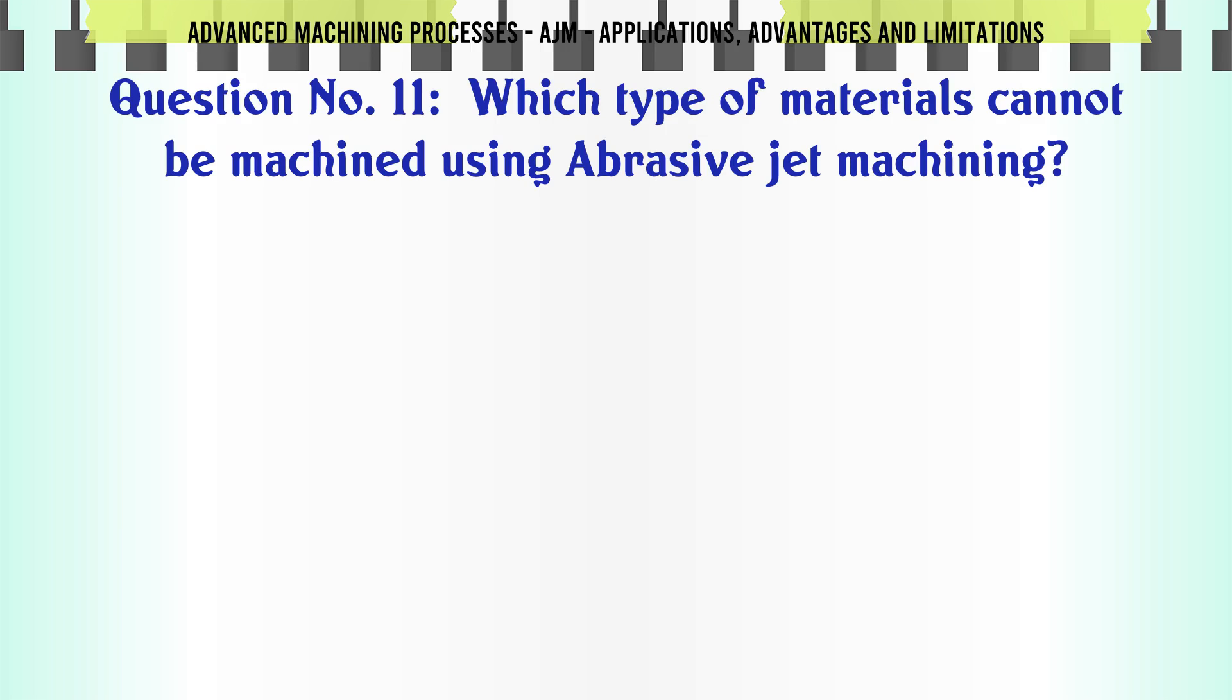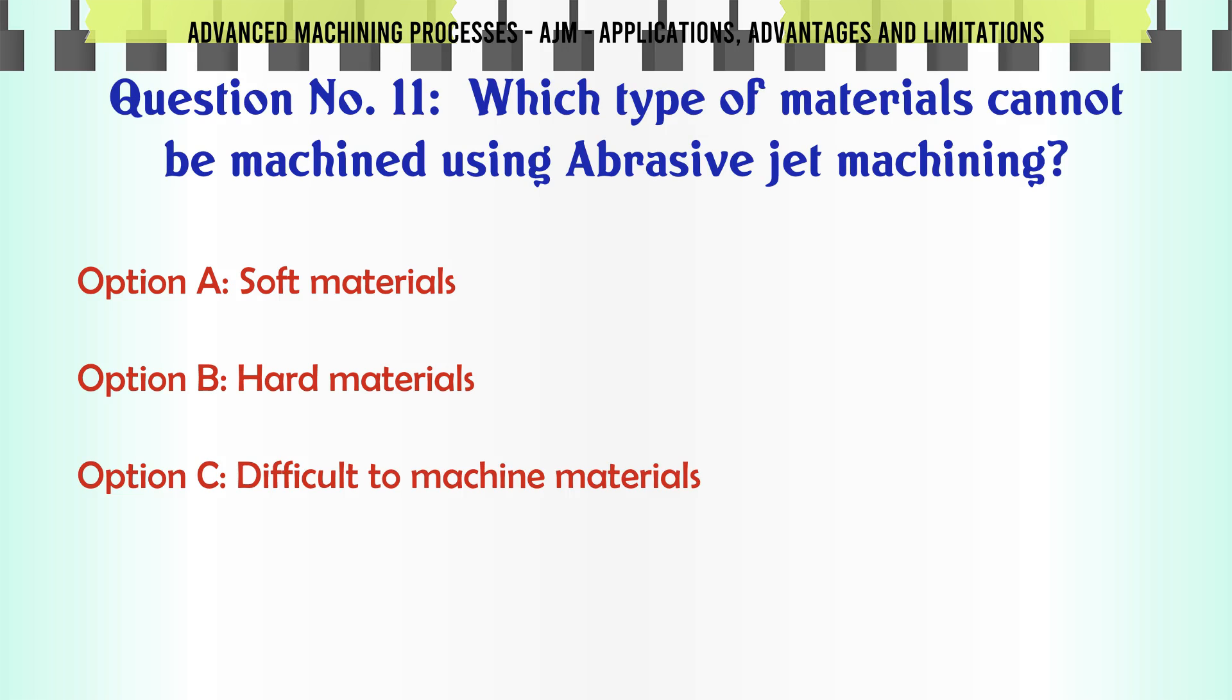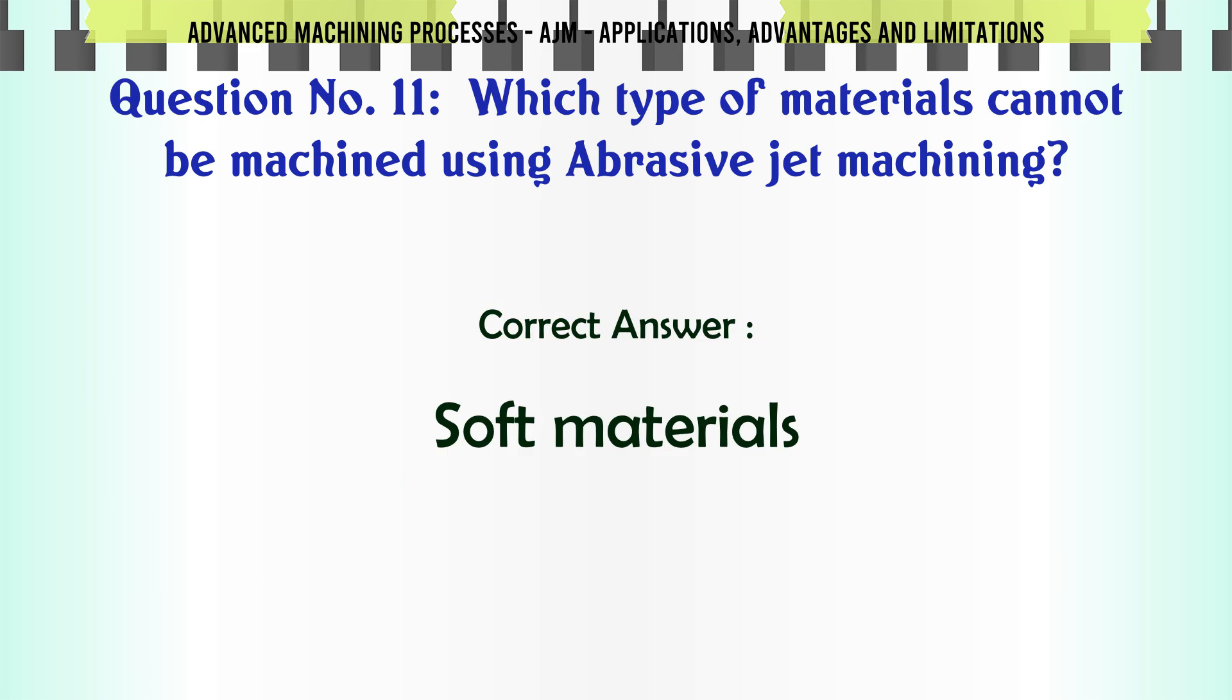Which type of materials cannot be machined using abrasive jet machining? Option A: Soft materials. Option B: Hard materials. Option C: Difficult to machine materials. Option D: None of the mentioned. The correct answer is soft materials.